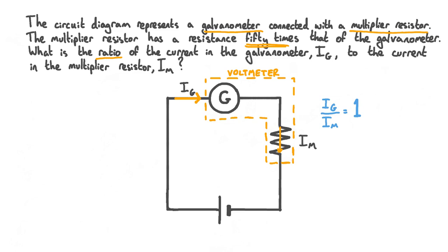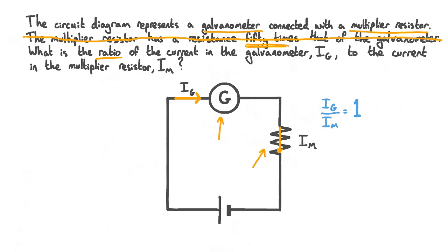There is also a simpler way of answering this question that doesn't require any algebra. We don't even need to know how a voltmeter is designed, nor do we need to know anything about the resistances. It's enough just to see that these two components are connected together in a single series circuit. In a series circuit, the rate of flow of charge — in other words the current — is the same at every point, which means the current in the galvanometer Ig must be the same as the current in the multiplier resistor Im. And if Ig equals Im, then Ig over Im is 1.